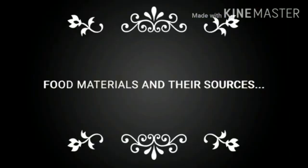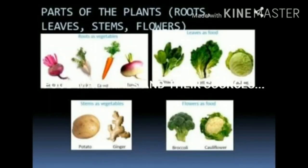The next topic is food materials and their sources. The main sources of our food are plants and animals. Plants as a source of food — food from stems, for example: potato, onion, ginger, and garlic. Another one is food from roots, for example: carrot, radish, turnip, and sweet potatoes.